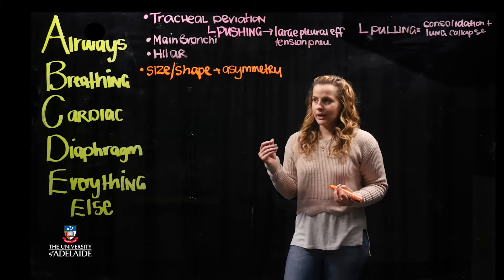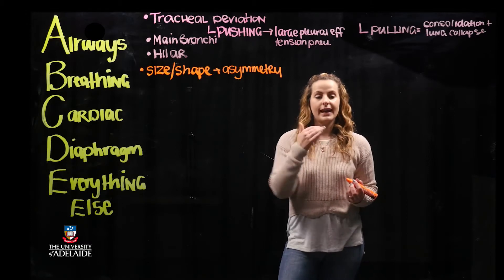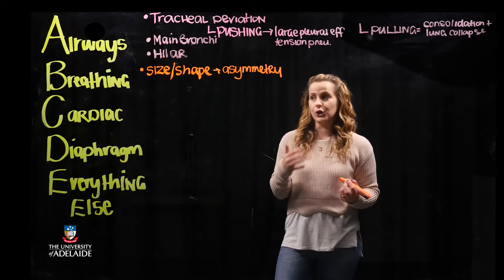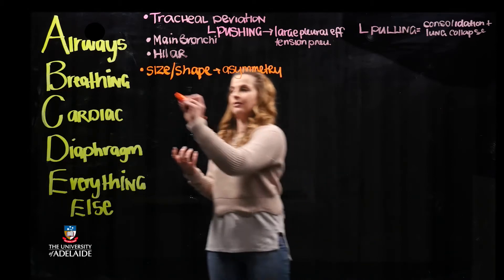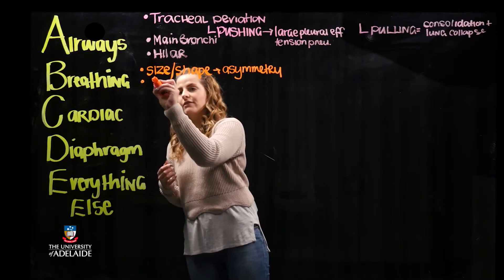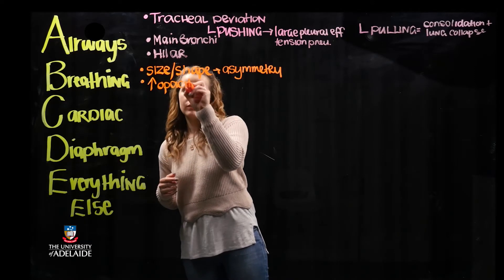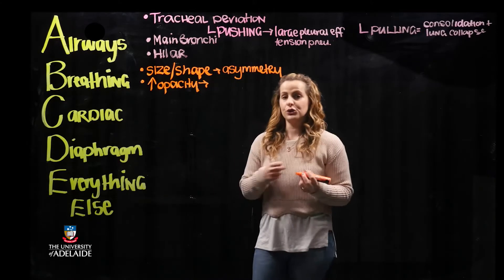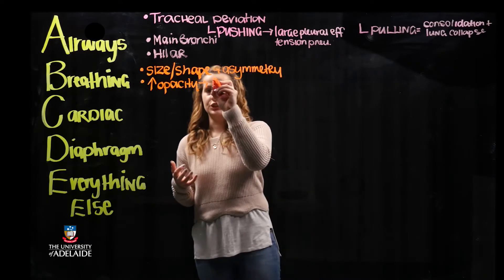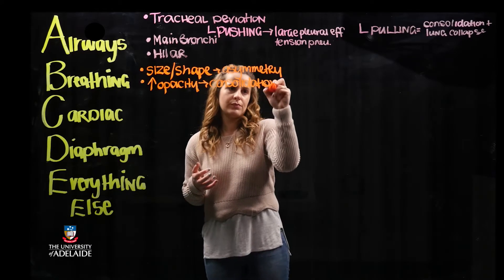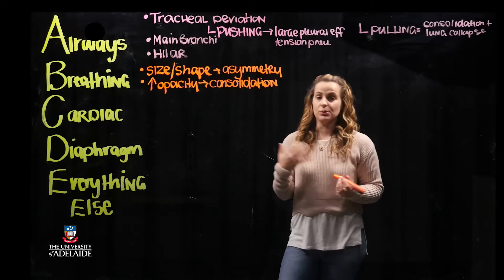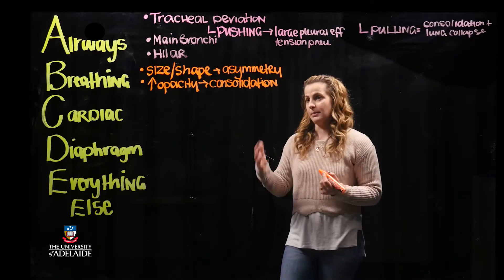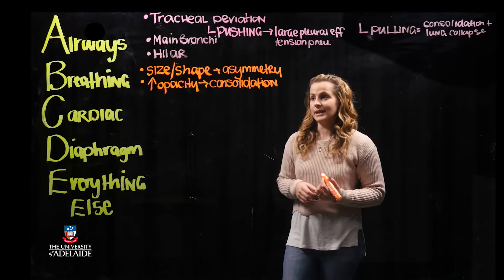The second main criteria is considering each segmental or zonal level and looking at the density, looking if there are specific regions that have increased opacity which is then going to result in consolidation. This is important in terms of being able to recognize any obstructions or interstitial fluid or blood in that region.